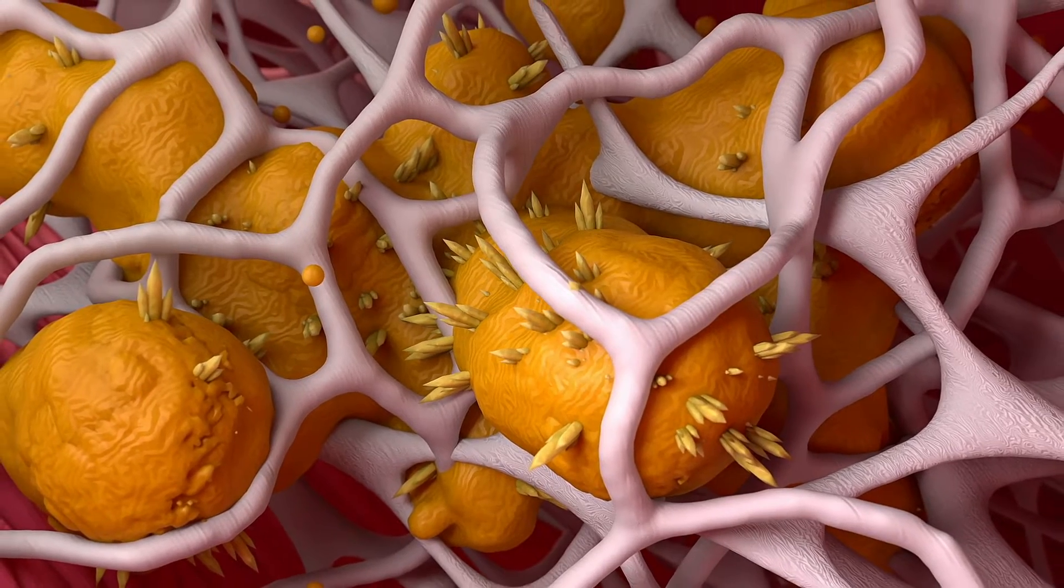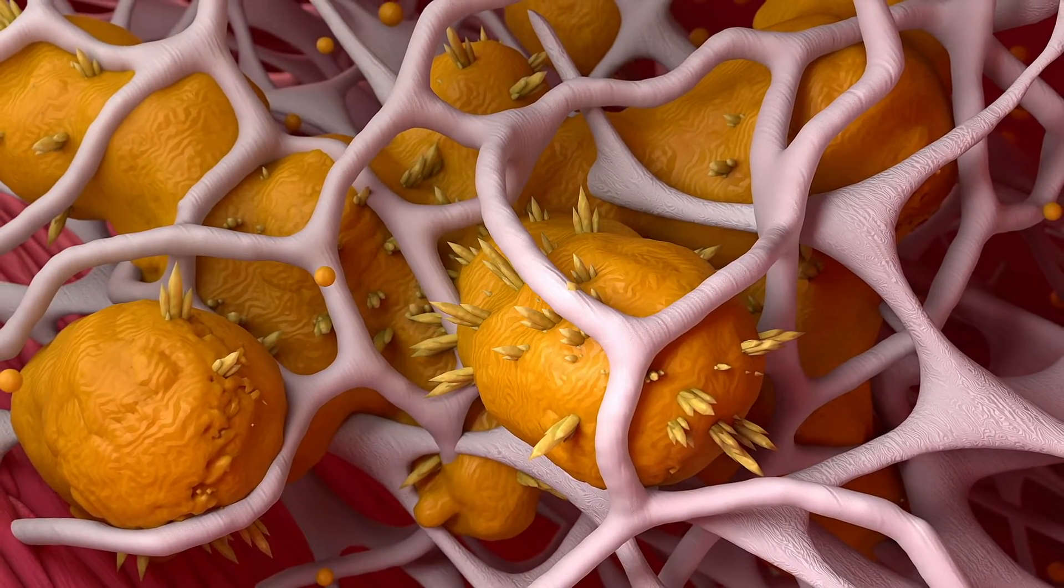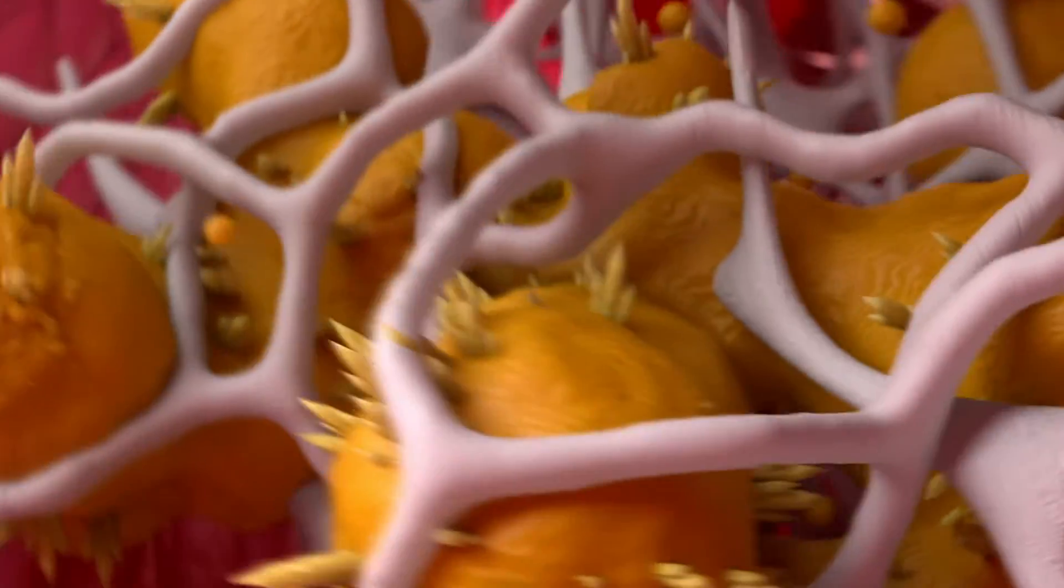Smooth muscle cells transform into fibroblasts and migrate to the top of the plaque, helping to stabilize its cap.